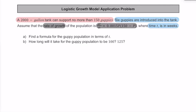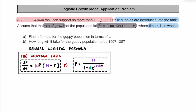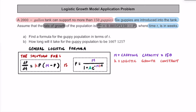Before we get started on actual calculations, let's make sure we know our formulas first. We have our general logistic formula: dp/dt is equal to some constant k multiplied by p multiplied by the quantity of m minus p. Now m is going to represent our carrying capacity — the maximum capacity of that tank — which in this case is 150. And k is going to be that value in front of p, so in this case k equals 0.0015.